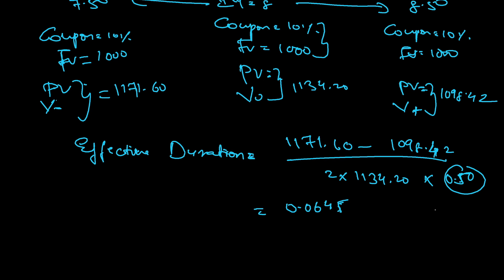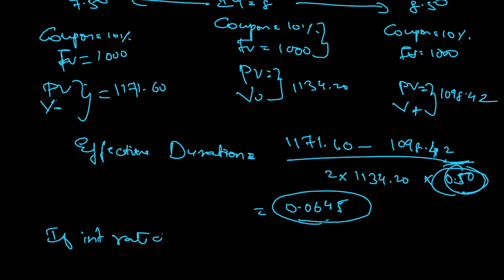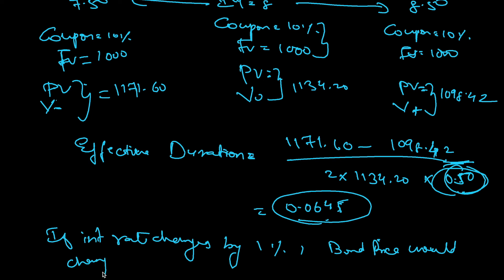Because we are dividing by 0.50, this net result is the change for one full percentage. This means the interpretation is: if the interest rate changes by 1%, the bond price would change by approximately 6.45%. This is an approximate figure for effective duration.